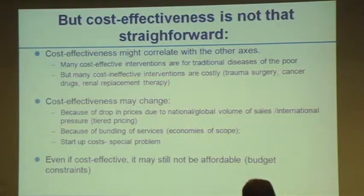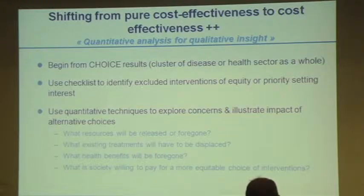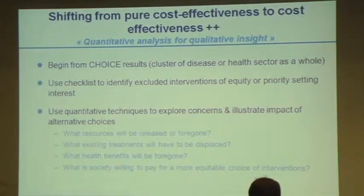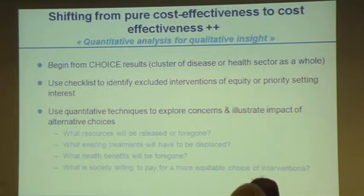Even if cost-effective, an intervention may still not be affordable. If we start with the most cost-effective, we use standardized techniques from the CHOICE results across a broad range of interventions, and then use quantitative techniques to explore concerns and illustrate the impact of alternative choices. If you make alternative choices, you answer the questions: what resources will be released or foregone? What existing treatments will have to be displaced? What health benefits will be foregone? And what is society willing to pay for a more equitable choice compared to a more cost-effective choice?